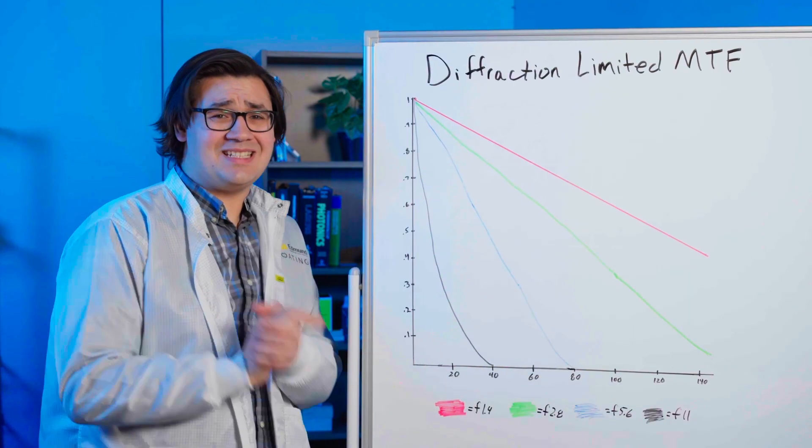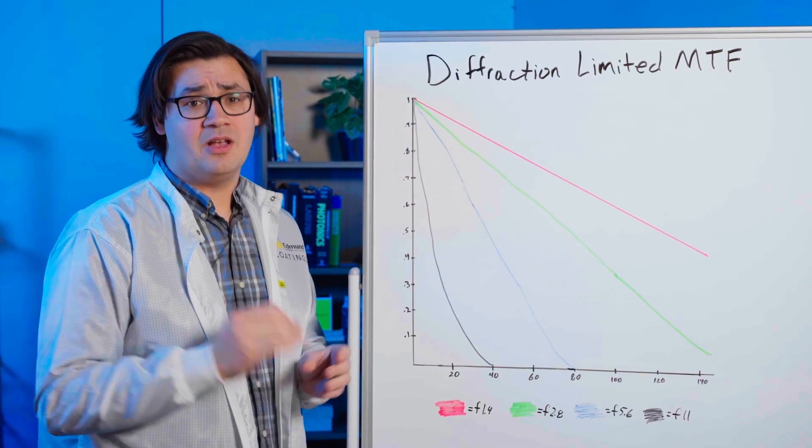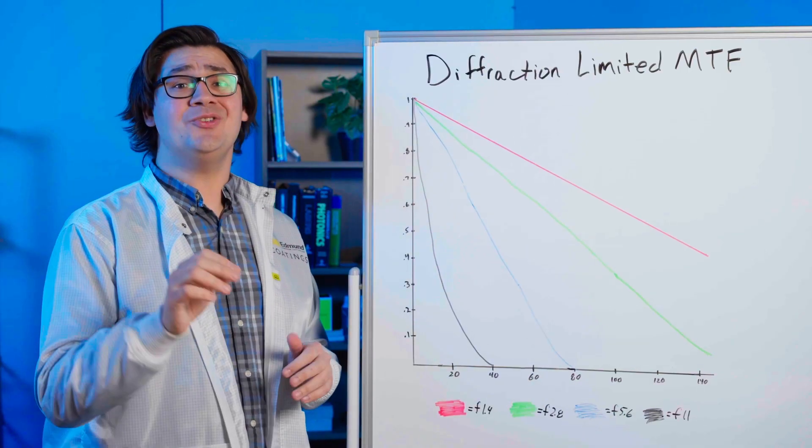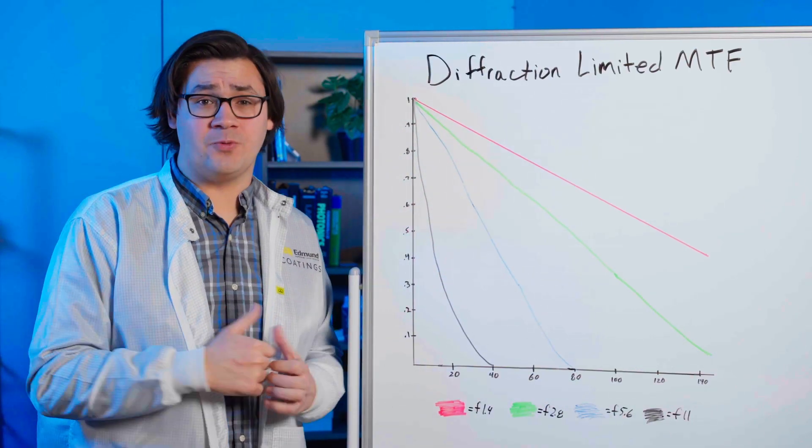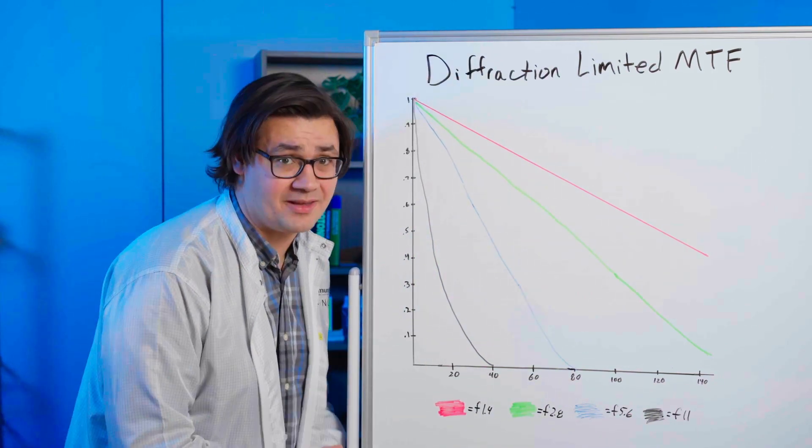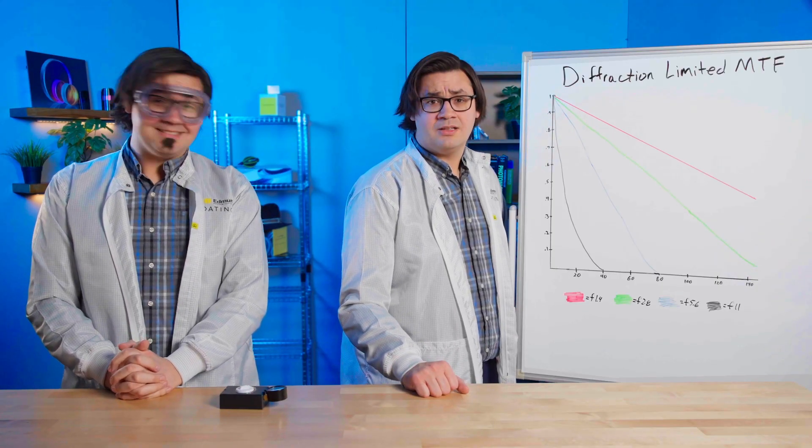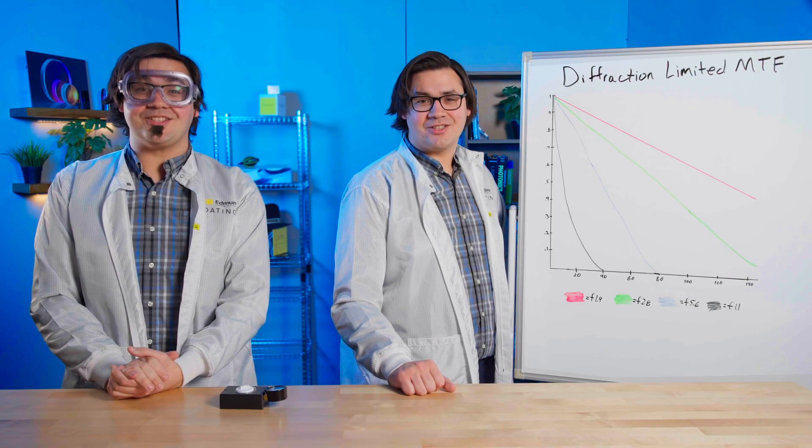Peak lens performance is typically between F2.8 and F5.6. From a fully open lens, increasing the F-Number normally drives its performance up. But at some point, the laws of physics step in and we start being pushed down by the diffraction limit. But don't just take my word for it. Let's pop over to the lab to see this phenomenon in action.